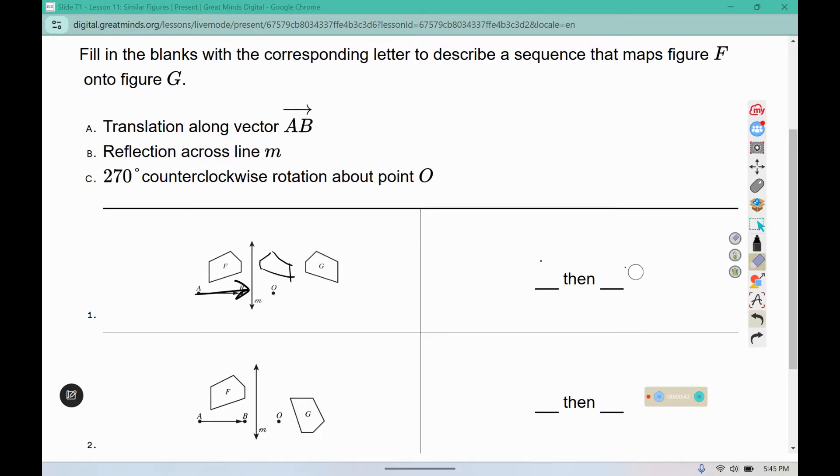Using those same motions listed above, determine what order of rigid motions need to occur to move from F to G. Write the first motion here and the second motion here.